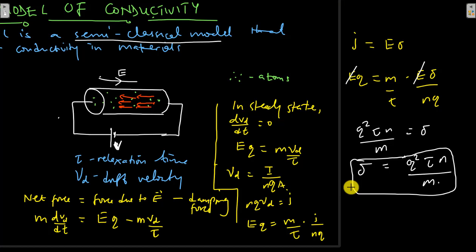However, the Drude model fails to quantitatively predict some of the conductivity characteristics of materials, which are then explained by quantum physics. For this video, we'll stop here.